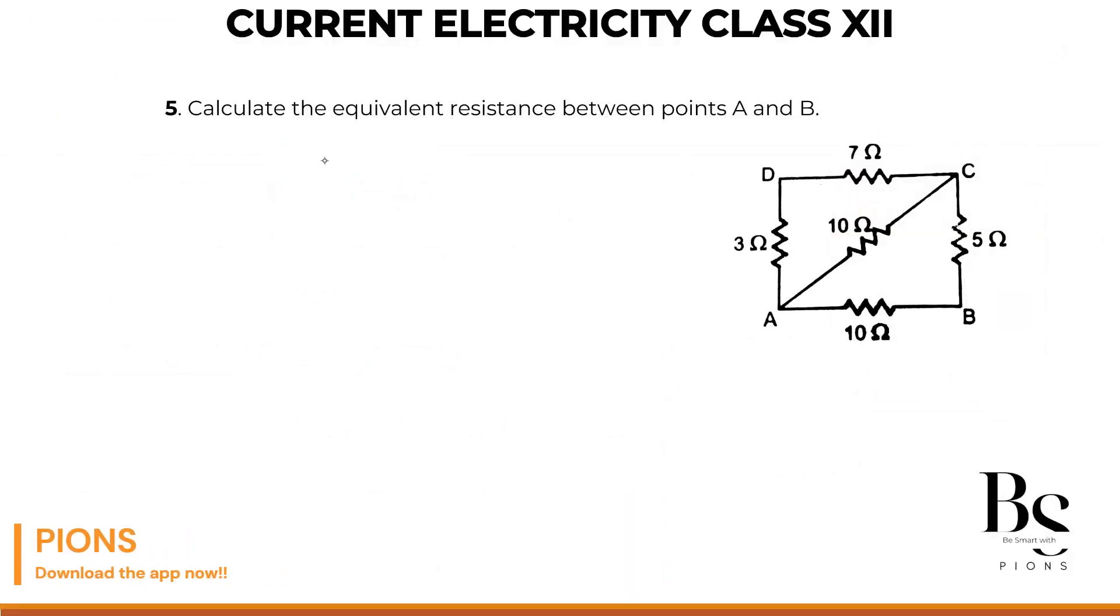Calculate the equivalent resistance between point A and B. So imagine that you are connecting a battery between point A and point B. If you are connecting like this, you can see that this upper branch, this 3 and 7, the current which will flow in this branch, the same current, it doesn't have any path to go anywhere.